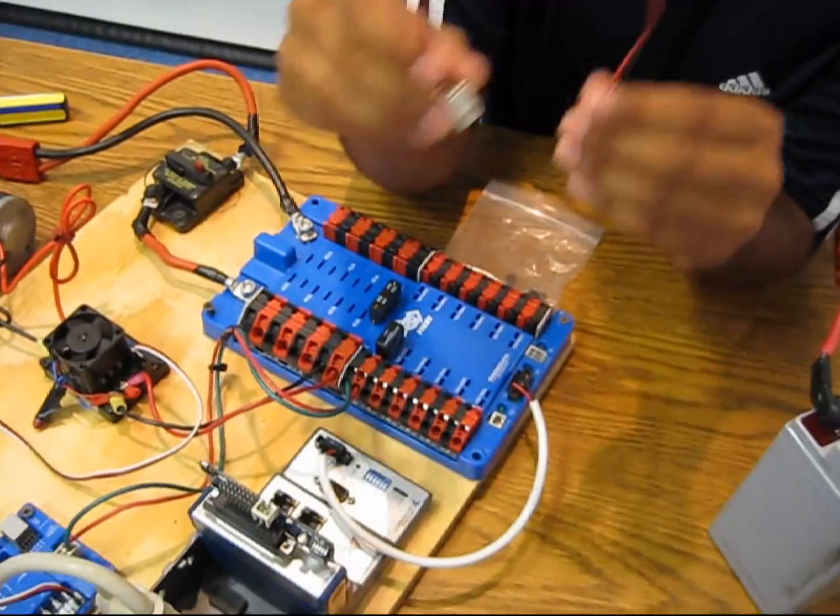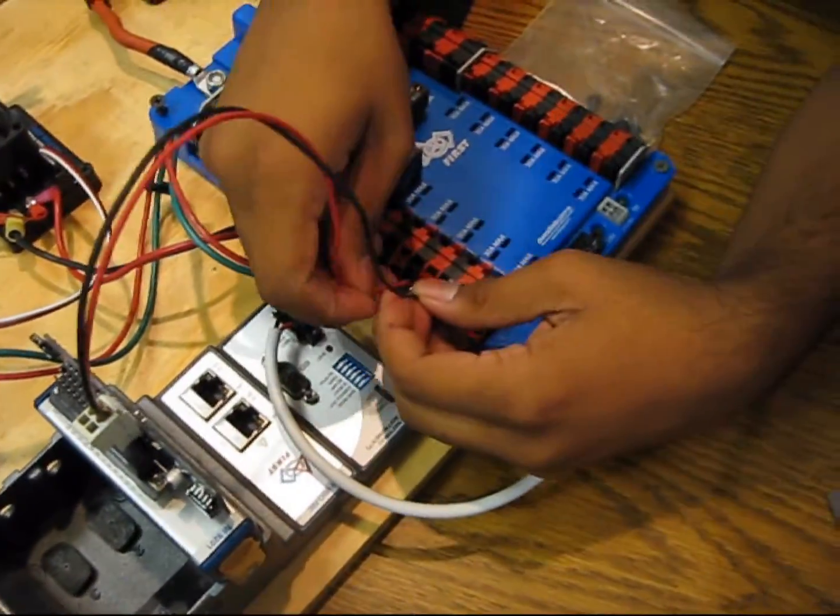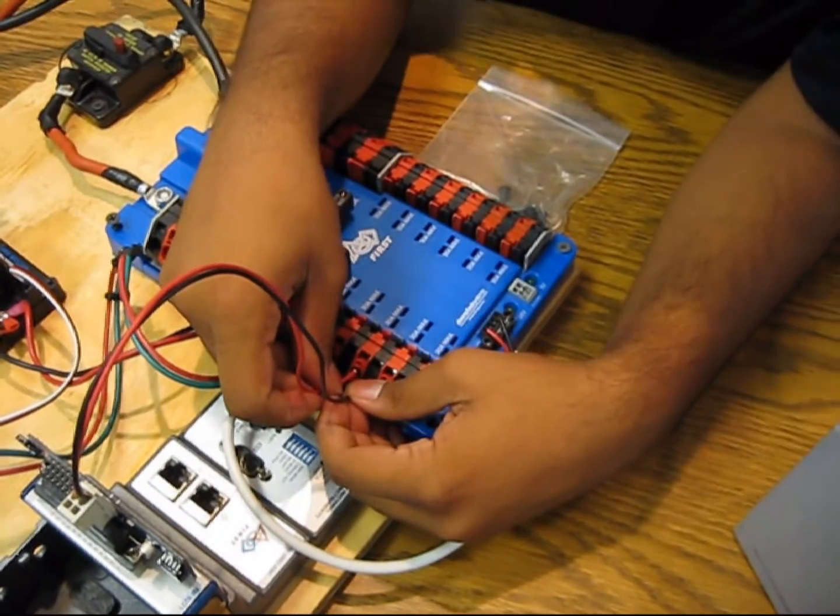To read the battery voltage, we plug in this cable into the analog input and then take these wires and plug them into the power distribution board.